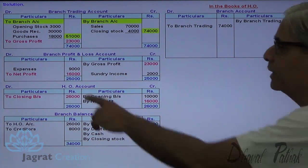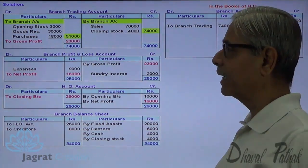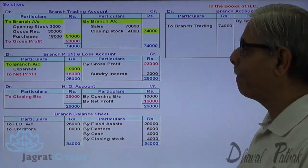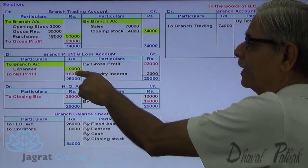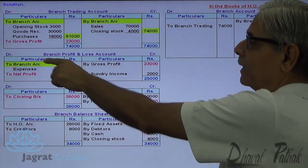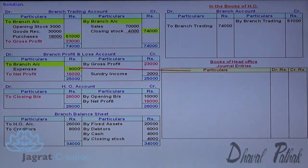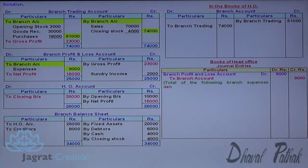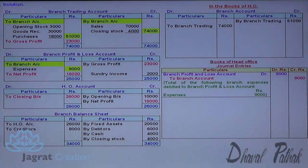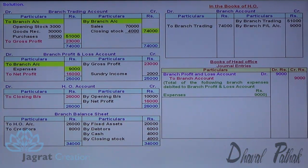Now write the entry for expenses. Branch profit and loss account debit 9,000 to branch account credit. The total of the following branch expenses is debited to branch profit and loss account and branch account is credited for that — 9,000 credited to branch account.